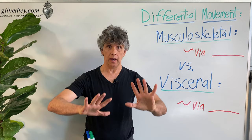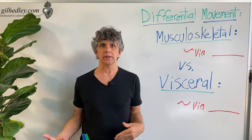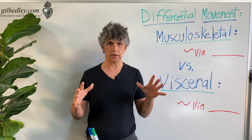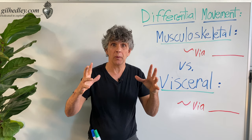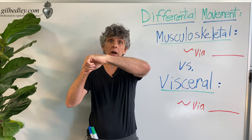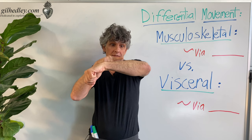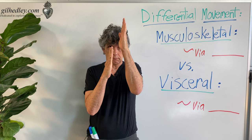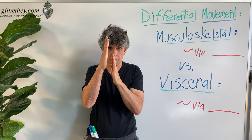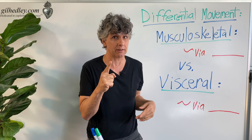Differential movement is what enables us to get up and go, whereas the trees stay still. Put your hand on a tree, hold it by its bark, and see if you can go anywhere with it. The bark doesn't slide on the tree. But our skin shears over the underlying tissues. That's differential movement — some tissues going in one direction relative to another tissue. That's nature's secret of what enables us to get up and move around.